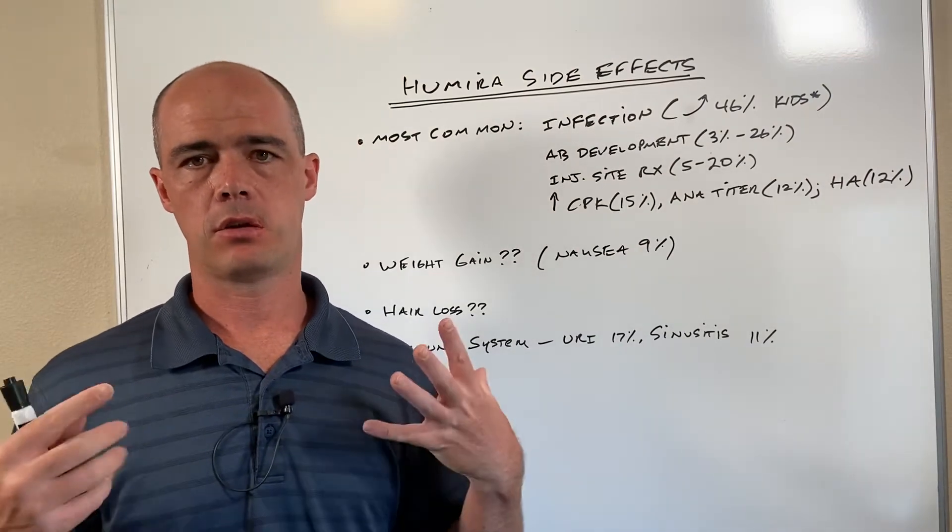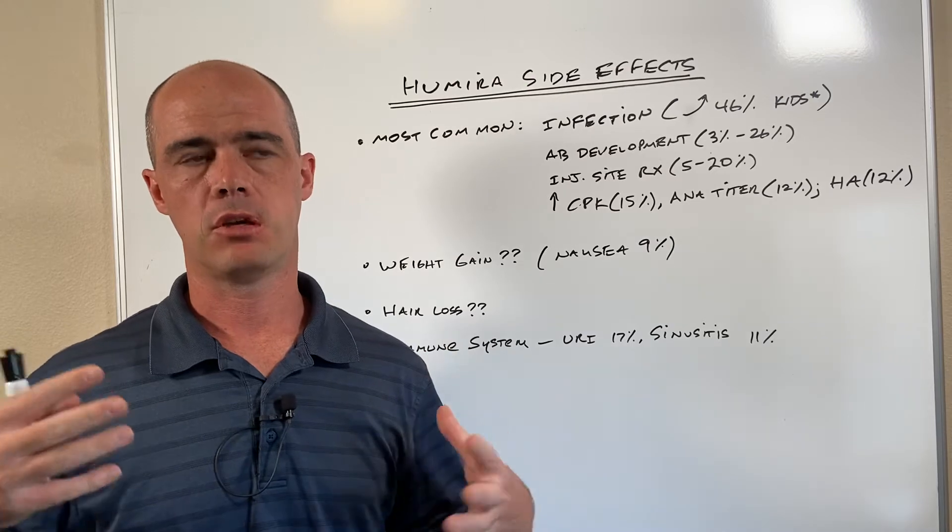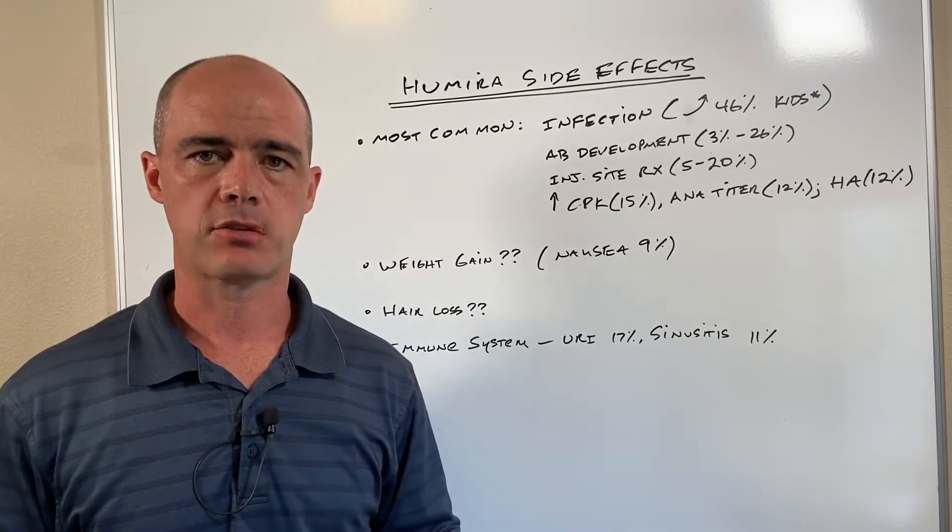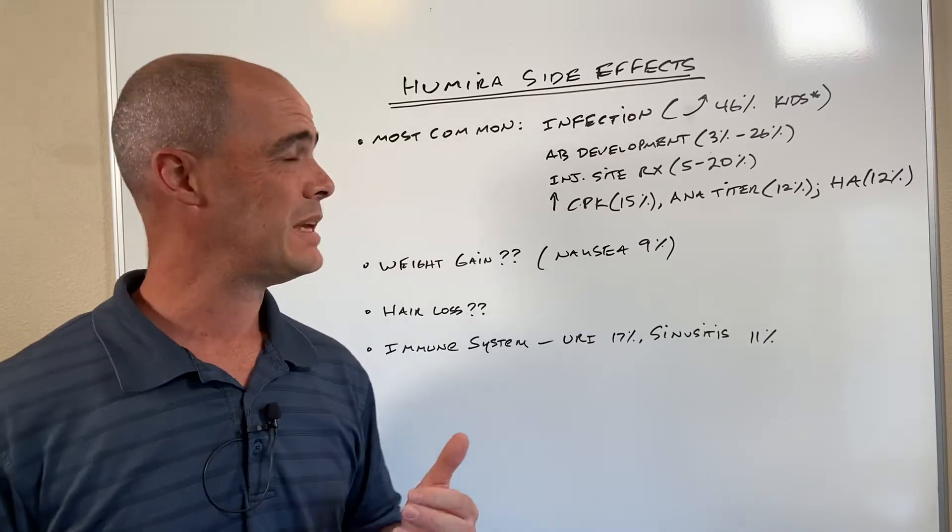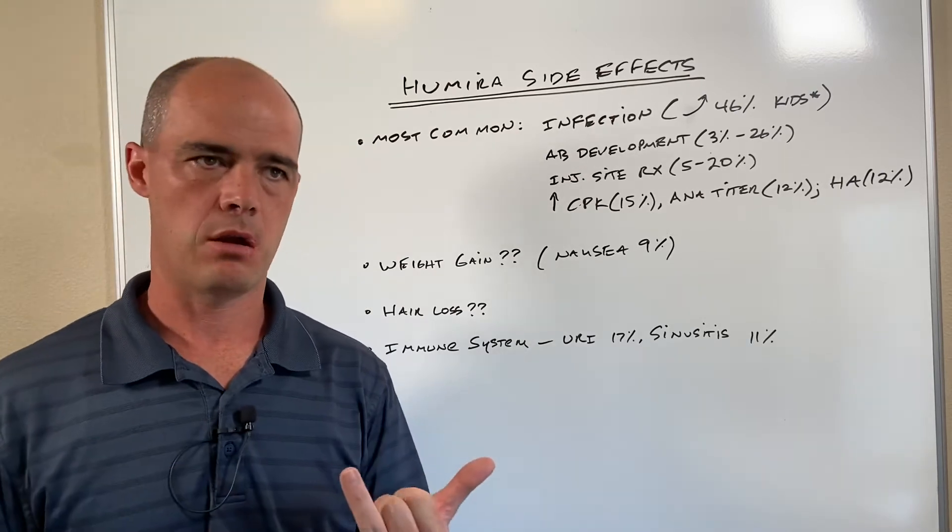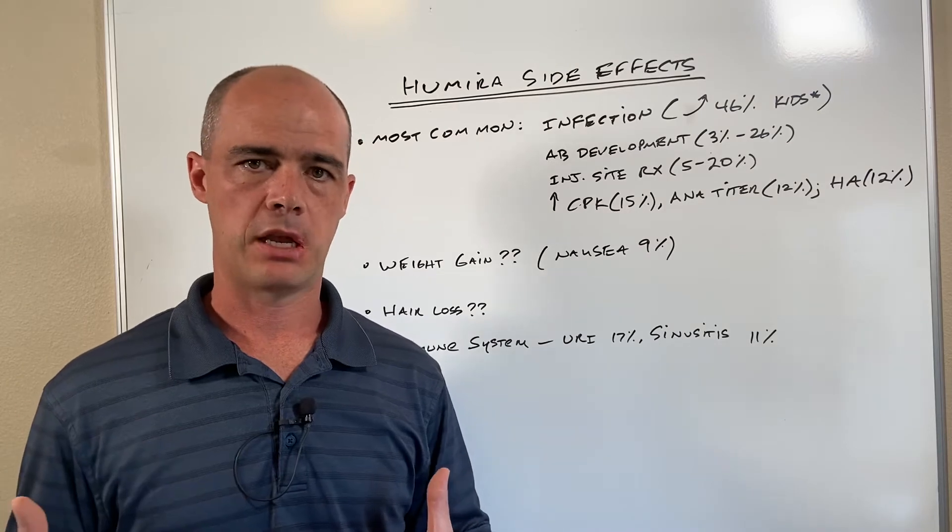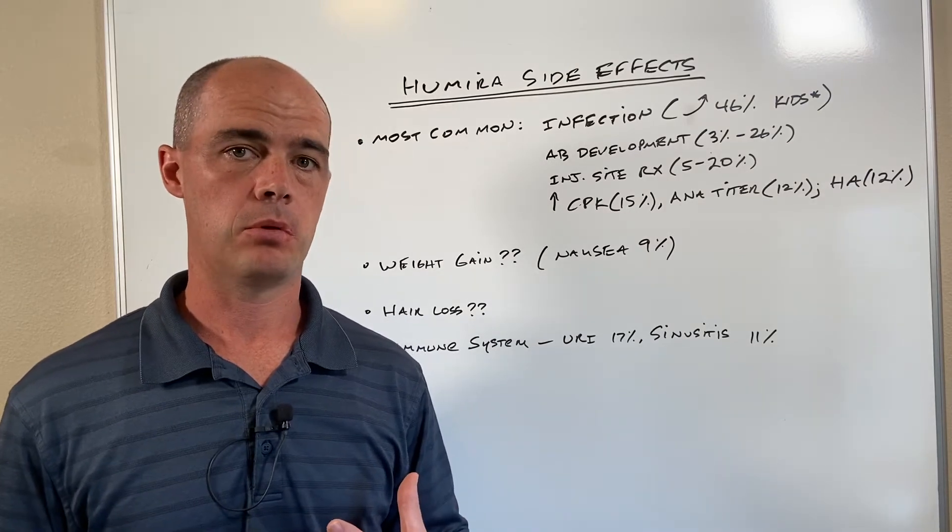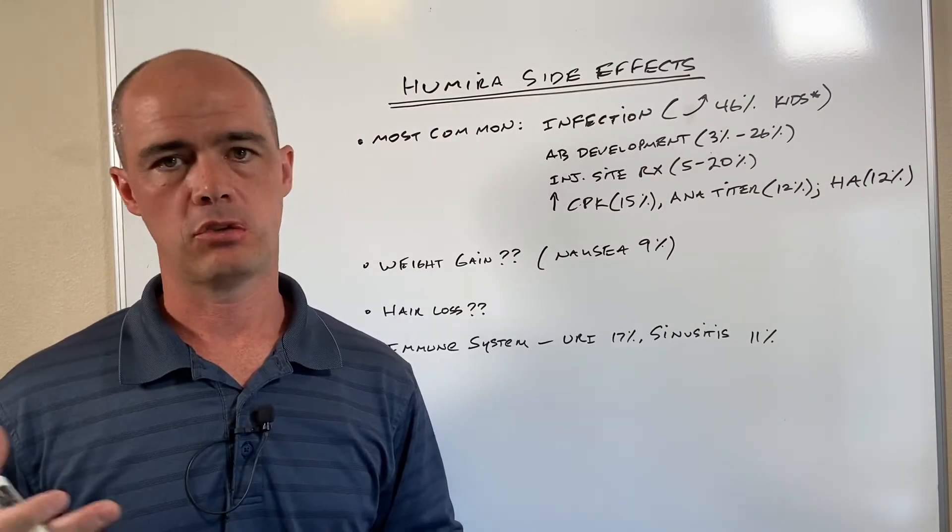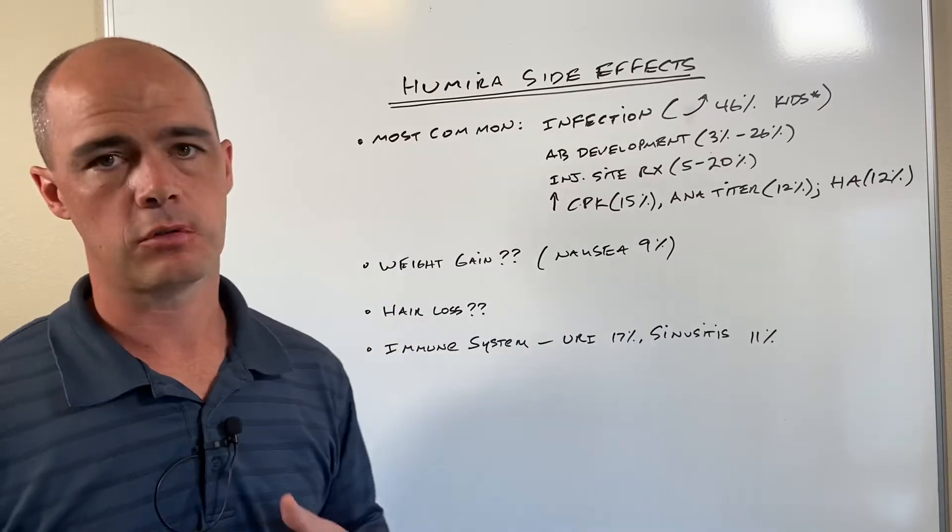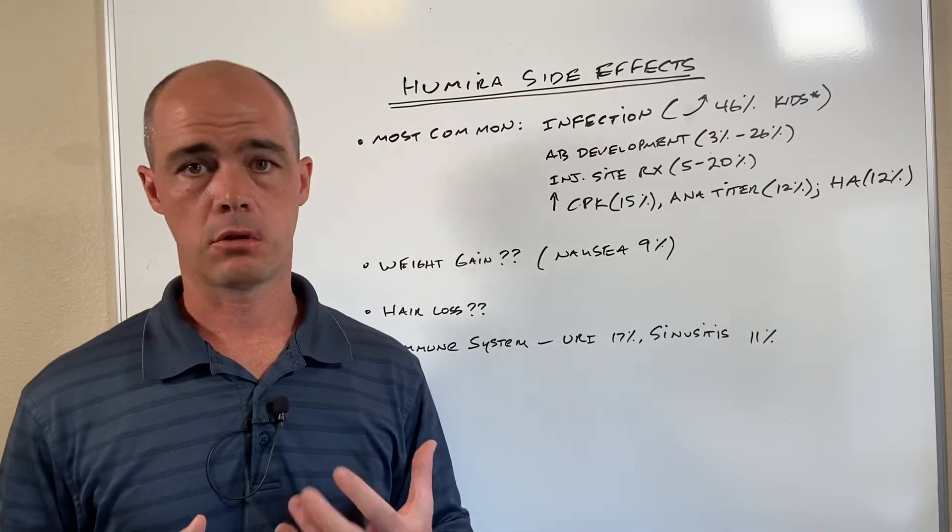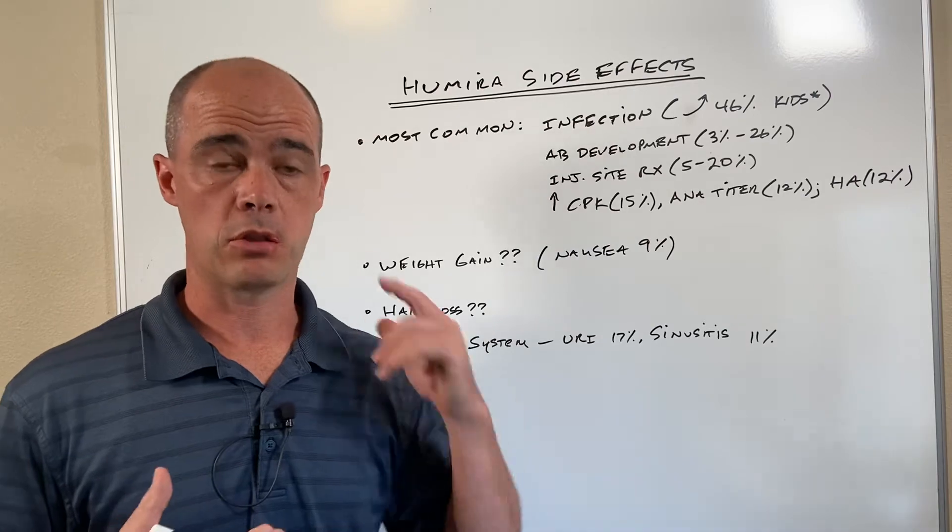Humira is a newer but very popular class of medications called TNF blockers. You see Humira, Enbrel, and Simponi, and some of these other injectable medications that are really helping people with conditions like arthritis. Humira can be used for ulcerative colitis, Crohn's disease, and some other things.